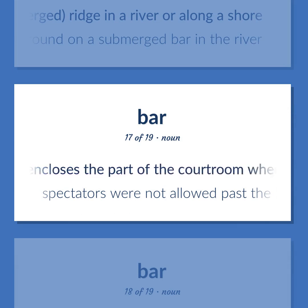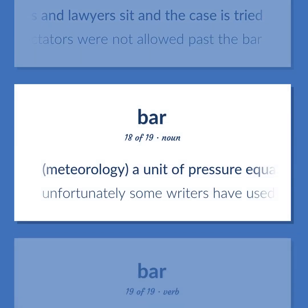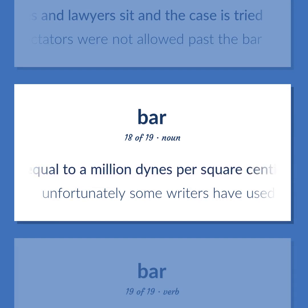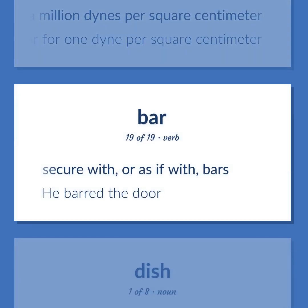A railing that encloses the part of the courtroom where the judges and lawyers sit and the case is tried. Spectators were not allowed past the bar. A unit of pressure equal to a million dynes per square centimeter. Secure with, or as if with, bars. He barred the door.